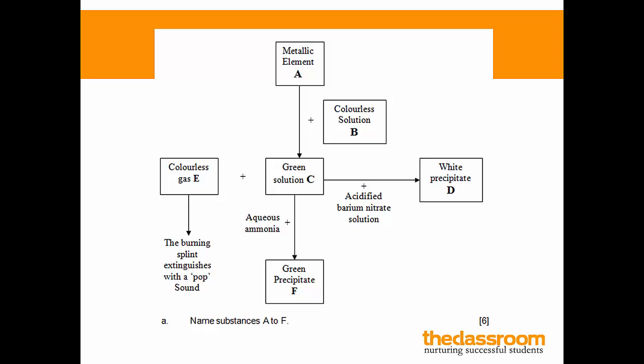Now for me, this flowchart here looks a bit more complex because there are many arrows. So I will start with things that I know. Now, you don't always have to go forwards. You can go forwards or backwards or sideways. So I'm going to start with something that I know, which is this colorless gas E. Now, because the pop sound tells me that this gas is hydrogen gas.